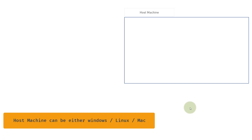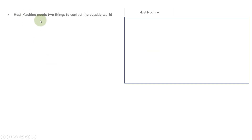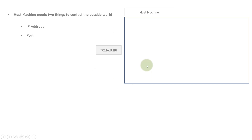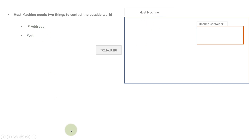Let's say there is a host machine — this represents any machine, like a Windows or Linux machine, where your operating system is running and you are running some programs. Now the outside world wants to contact this host machine. The host machine needs two things to connect to the outside world: first is the IP address and second is the port. There must be some program running on some port, and you can access those programs using the IP address and port.